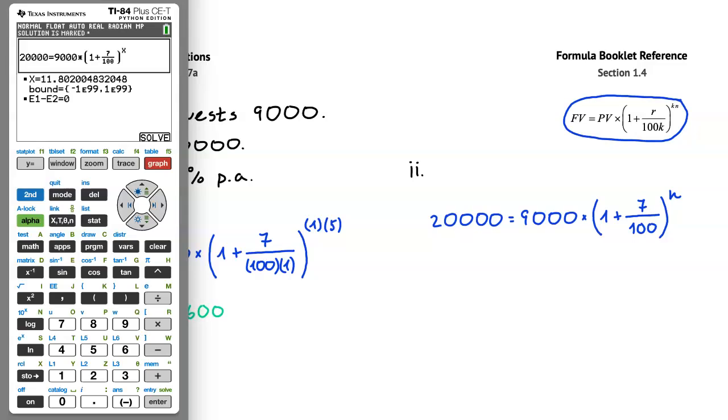However, since we are compounding annually, we have to round this number up to the next full year. Therefore, we got that n is 12 years.